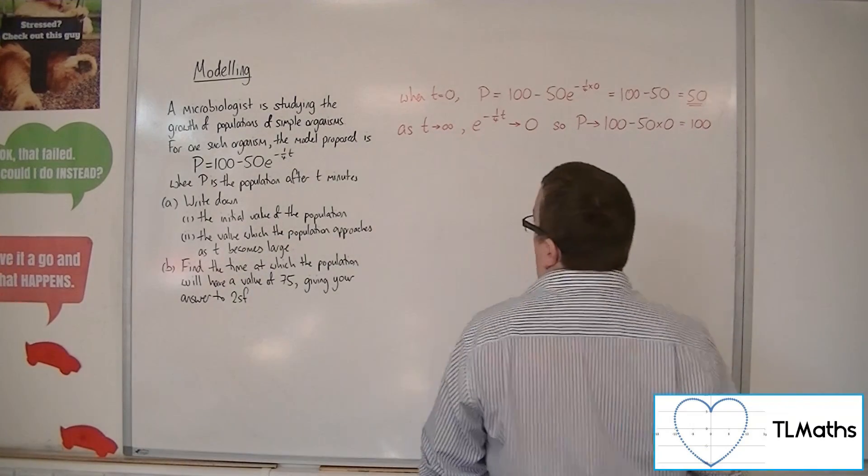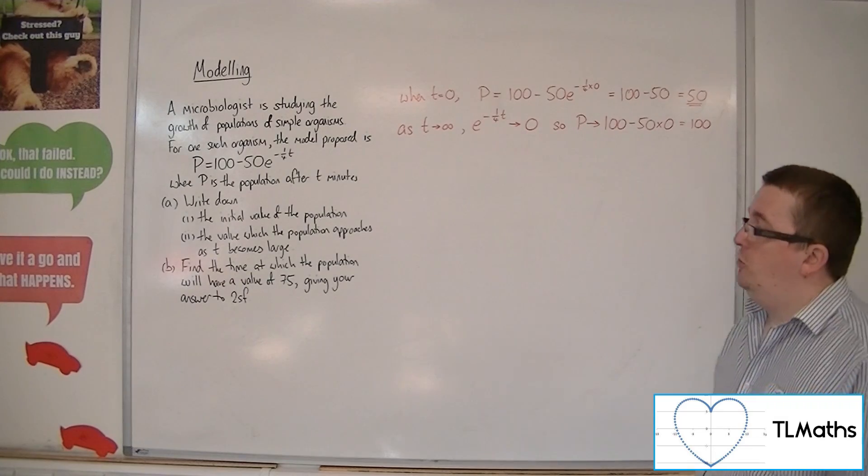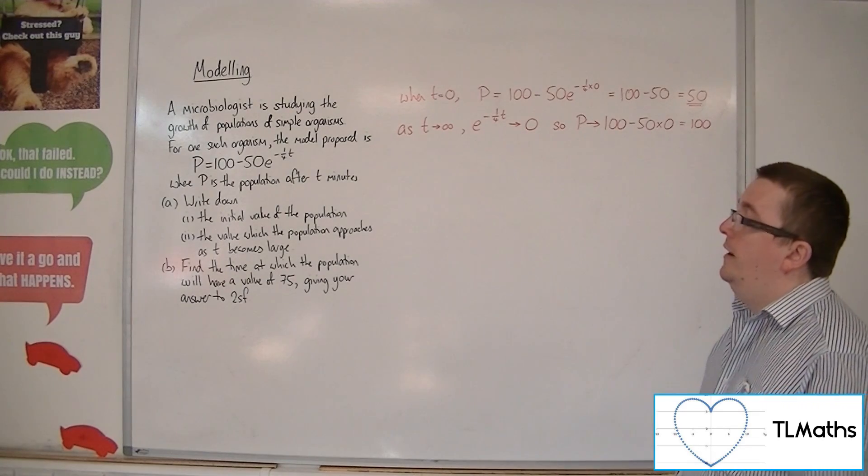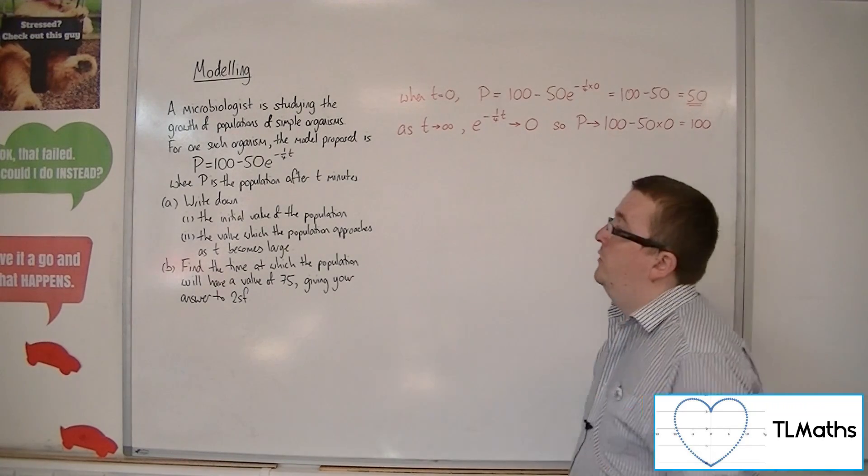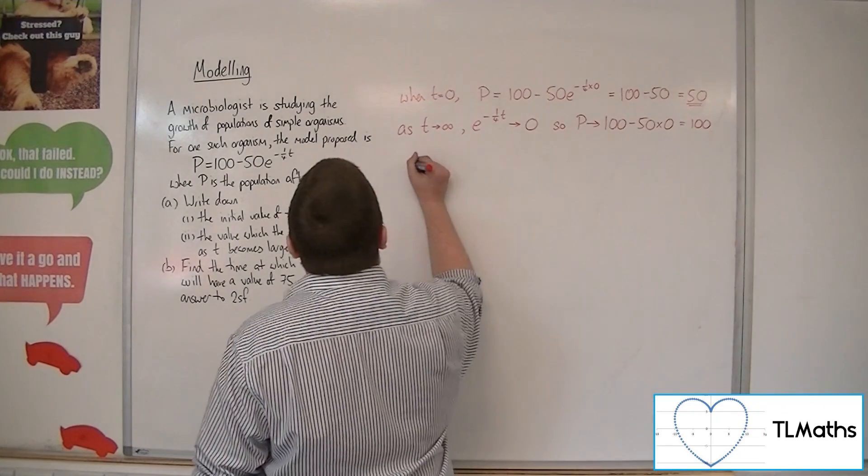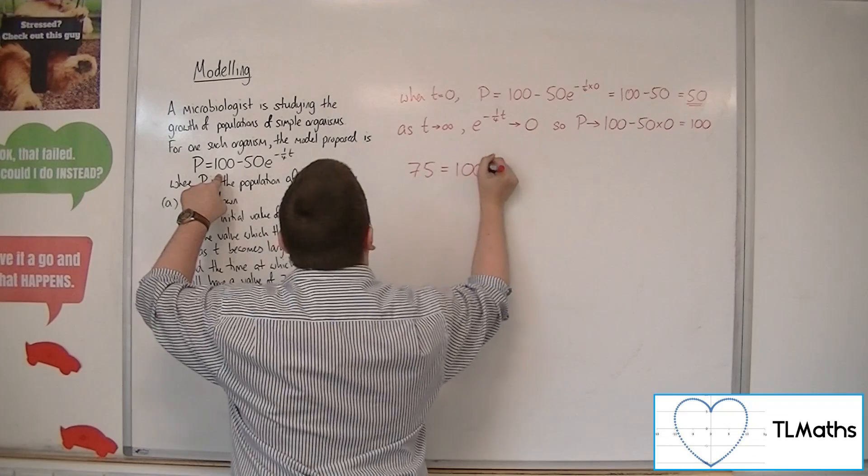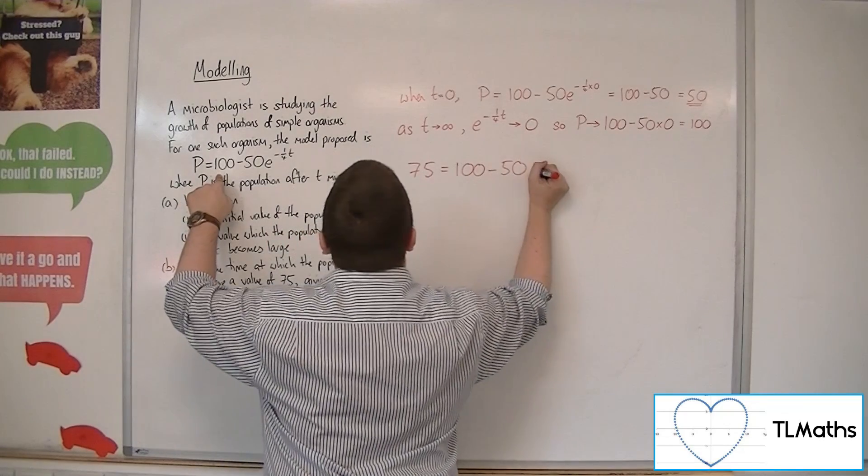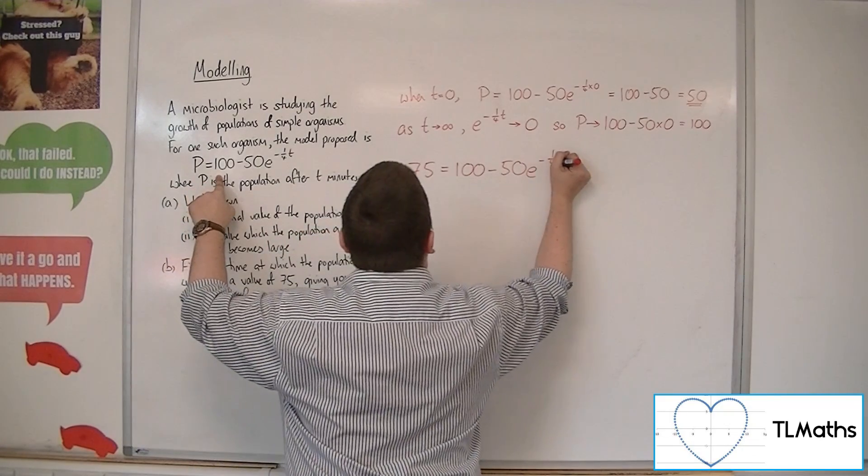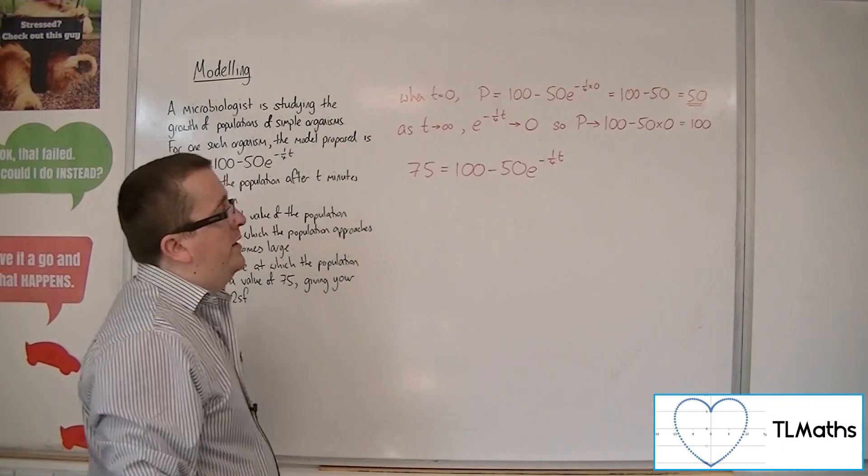Part B, find the time at which the population will have a value of 75, giving your answer to two significant figures. So if the population is 75, then 75 must equal 100 take away 50 e to the minus a quarter t. And our job is to find the value of t.